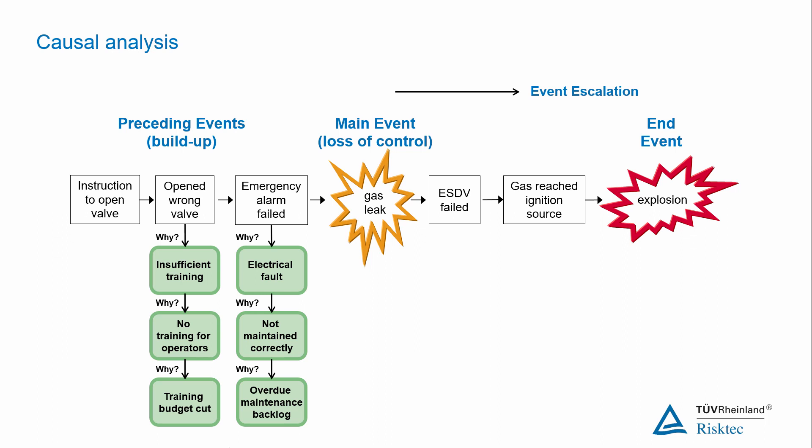Why was there an electrical fault? Answer, because it had not been maintained correctly. Why had it not been maintained correctly? You continue to ask why.